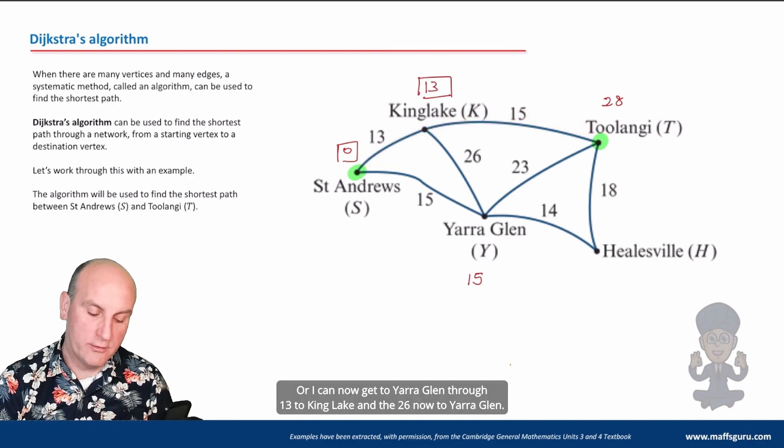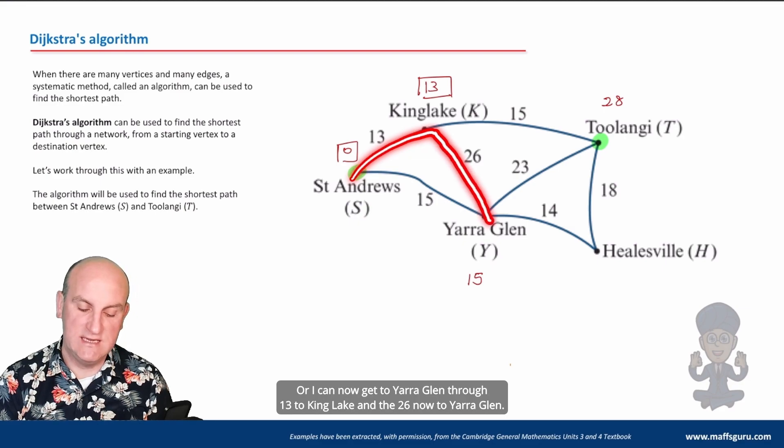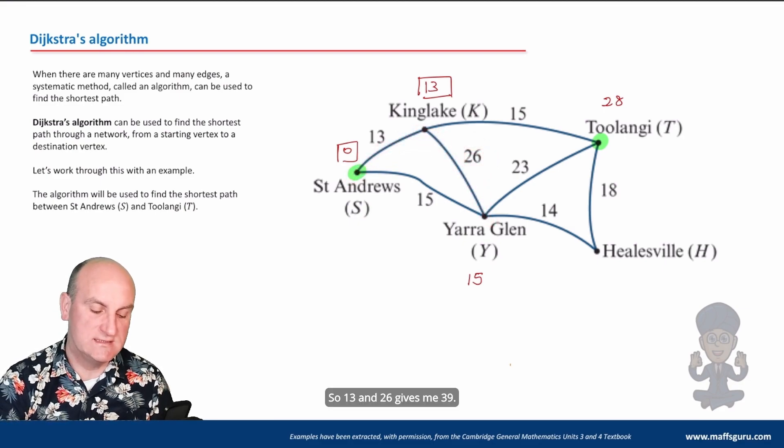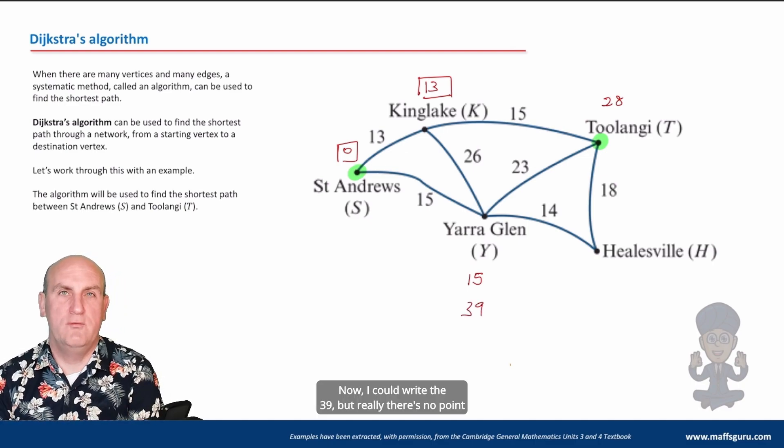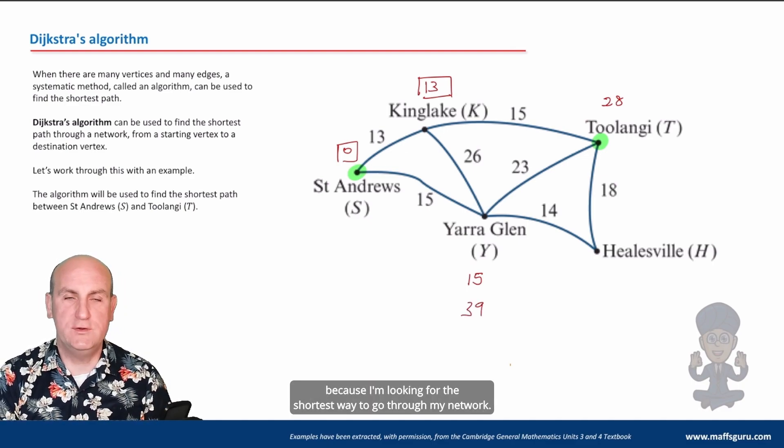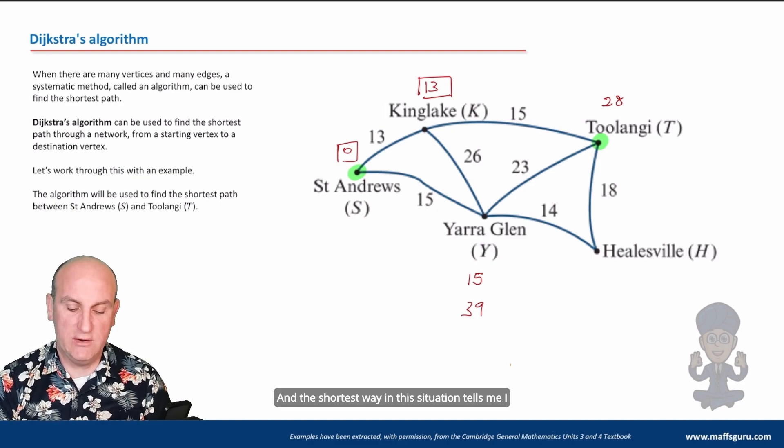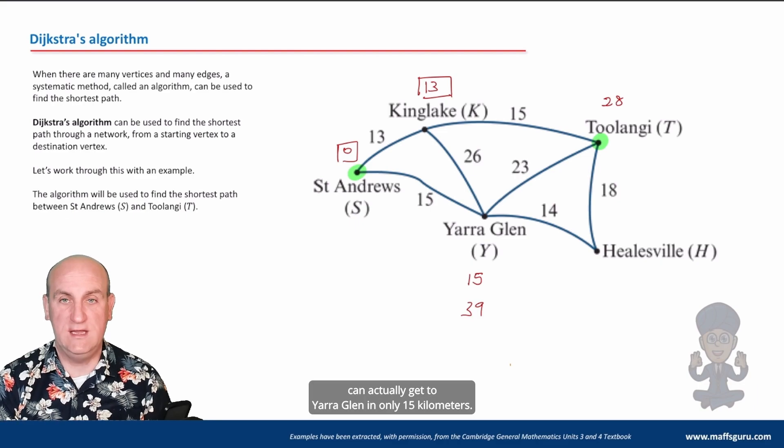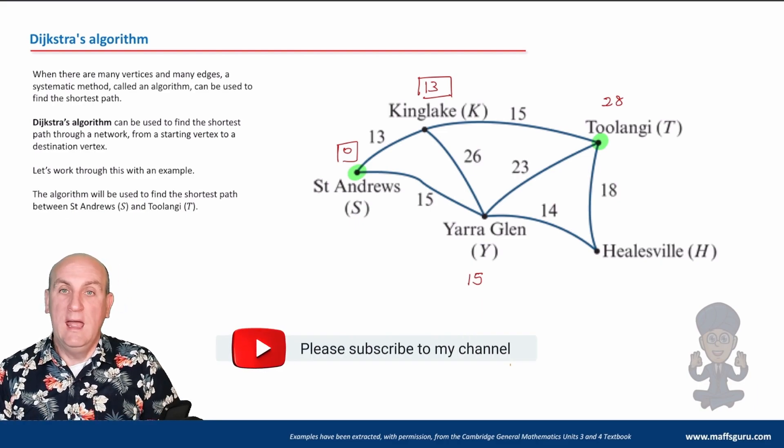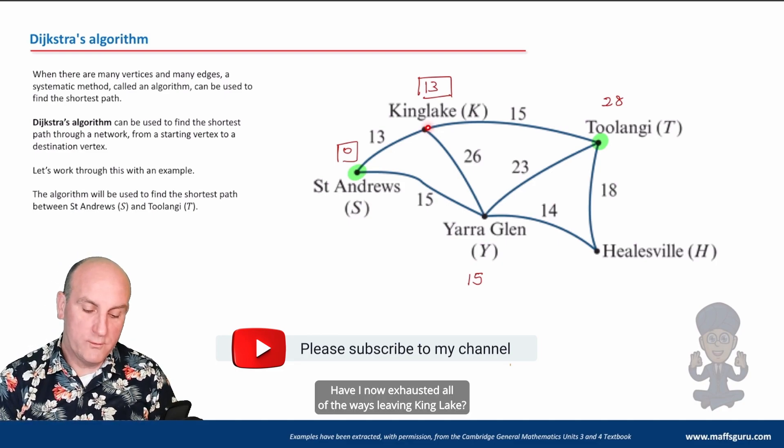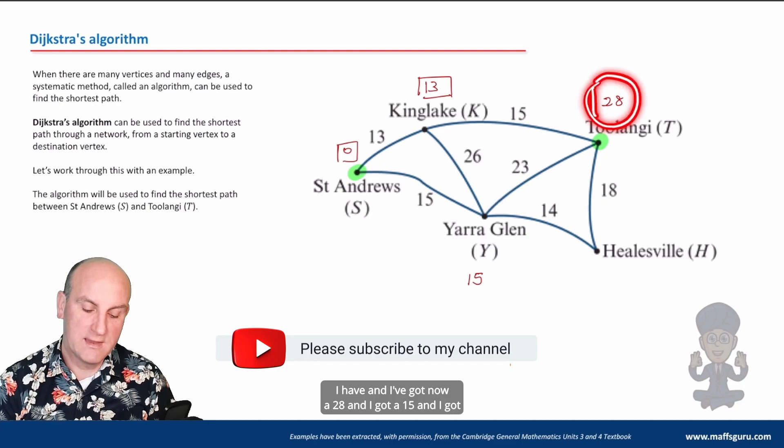Or I can now get to Yarra Glen through 13 to Kinglake and the 26 now to Yarra Glen. So 13 and 26 gives me 39. Now I could write the 39, but really there's no point because I'm looking for the shortest way to go through my network. And the shortest way in this situation tells me I can actually get to Yarra Glen in only 15 kilometers. So I'm actually not going to write the 39.